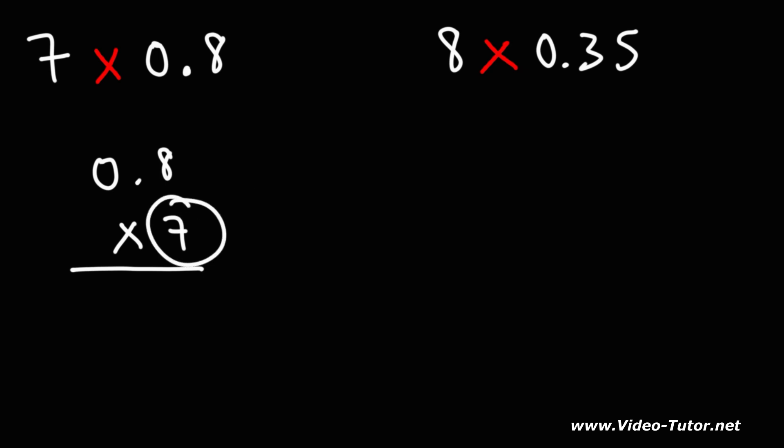Since the first number has only one digit, I like to put that on the bottom. So this is only going to give me one row instead of two rows.